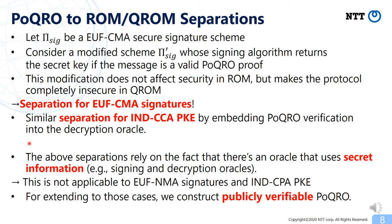We observe that those separations rely on the fact that there is an oracle that uses secret information, like a signing or decryption oracle. So this technique is not applicable to EUF-NMA signatures where there are no signing queries, or to CPA-PKE where there are no decryption queries. The reason why we need an oracle with secret information is that the LWE-based PoQRO needs a secret key for verification. Therefore, if we have a publicly verifiable PoQRO where verification can be done publicly, then we can extend those separations to EUF-NMA and CPA-PKE cases. Therefore, we next study constructions of publicly verifiable PoQRO.